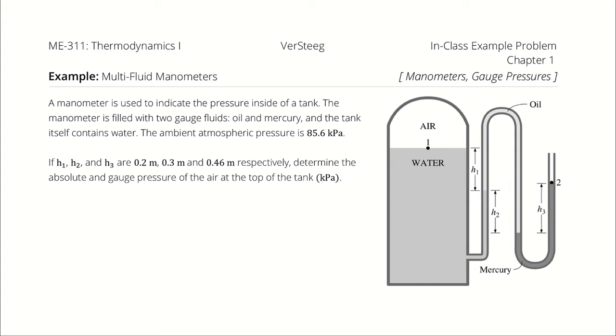If H1, H2, H3 are 0.2, 0.3, and 0.46 meters respectively, determine the absolute and gauge pressure of the air at the top of the tank in kilopascals.